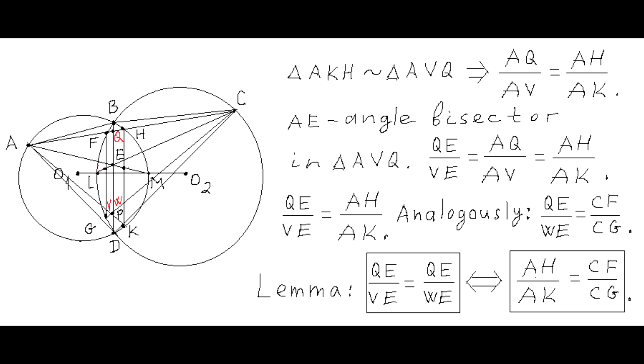If we prove the equality of these two ratios, it will prove that line segments AK, CG, and BD have one point of intersection, point P.